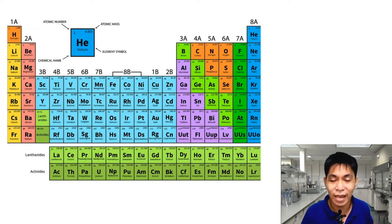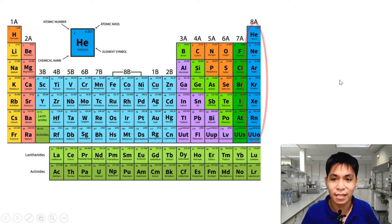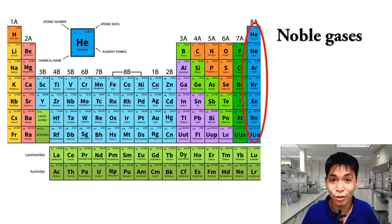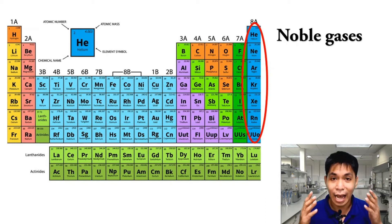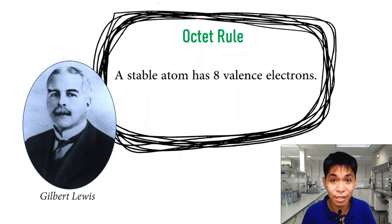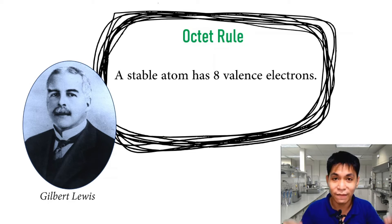In the periodic table of elements, there are many groupings. One special group is probably envied by other atoms — if they have feelings. That group is the noble gases. Noble gases are envied because they are said to be stable, and atoms want to be stable. Stability of an atom is defined by Gilbert Lewis using his Octet Rule, which states that an atom is stable if it has 8 valence electrons on its outermost shell.